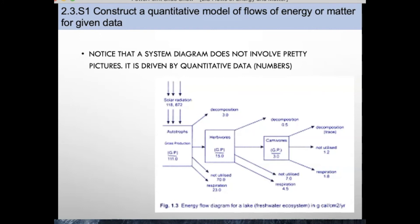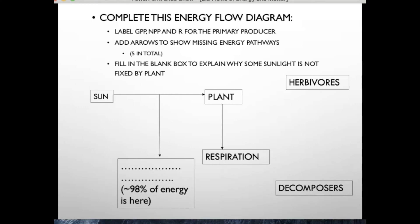When showing energy flows, we usually use quantitative models. Notice that a systems diagram does not involve pretty pictures for us to really understand what is going on — whenever we look at flows of energy or flows of matter, we like to use quantitative data. Pause at this point and complete the energy flow diagram. Make sure that you label the gross primary productivity, the net primary productivity, and R for the primary producers. You will also need to add appropriate arrows to show any missing energy flows, then fill in the blank boxes to explain why some sunlight is not fixed by plants.